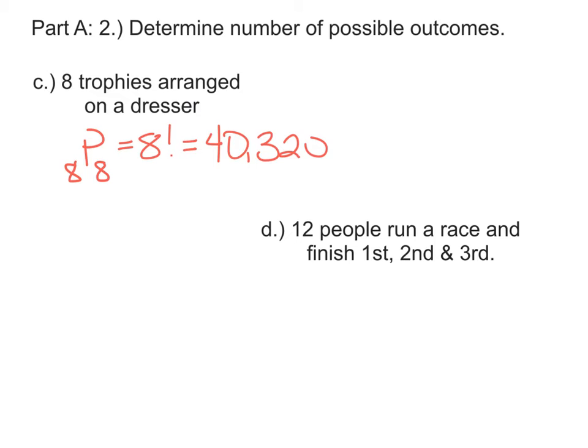If I have 12 people running a race and being placed in 1st, 2nd, or 3rd place, again, order matters, so we'll need permutations. And out of the 12 people, only 3 of them are going to be put in place.